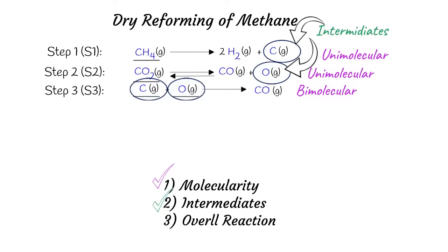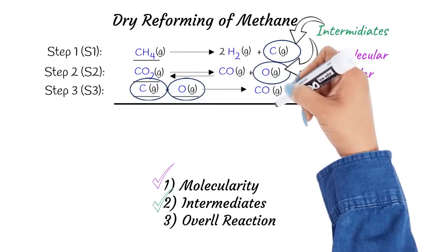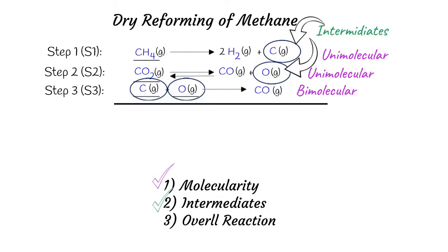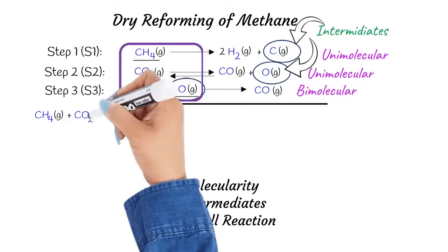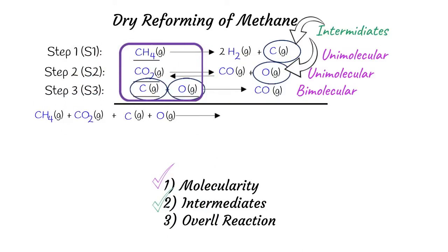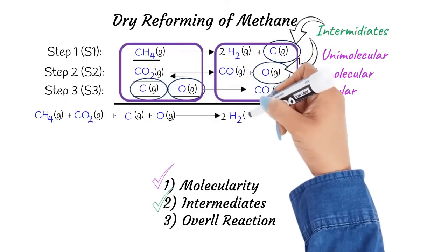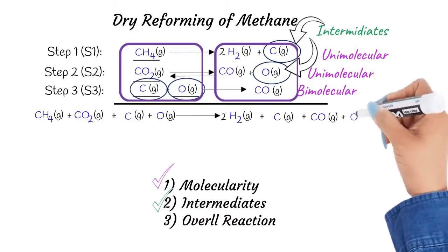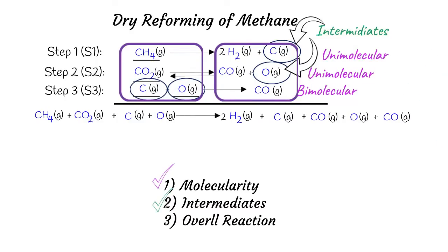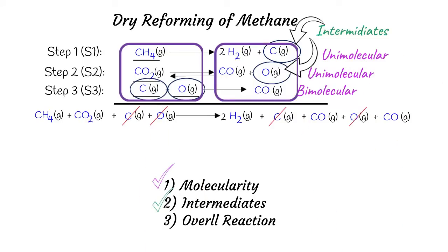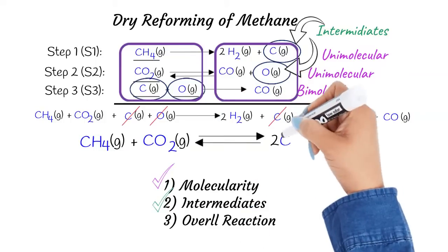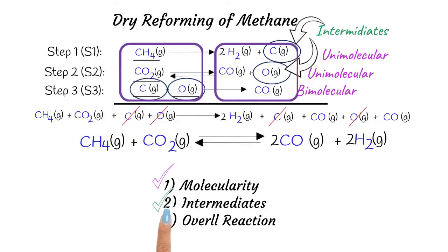Now let's add up the three elementary reactions to get the overall reaction. When we put all the reactants on the reactant side, we get CH4, CO2, C, and O. On the product side we get 2H2, C, CO, O, and CO. We can cancel out C and O because they appear on both sides of the equation. Therefore, we are left with CH4 and CO2 on the reactant side, and 2CO and 2H2 on the product side. Our overall reaction is CH4 + CO2 → 2CO + 2H2.